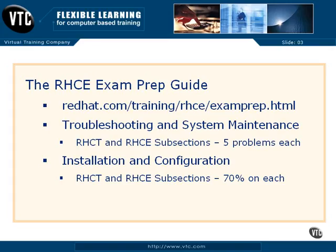The first section is known as troubleshooting and system maintenance. It includes RHCT and RHCE subsections. In other words, the five RHCT problems must be completed correctly within the first hour. Afterwards, you get one and a half hours to solve three of five problems in the RHCE subsection — a total of two and a half hours.